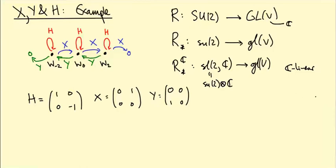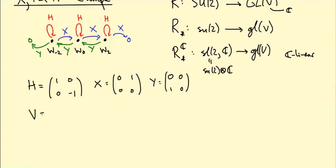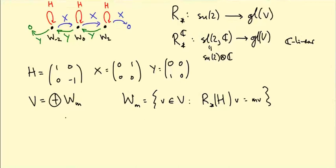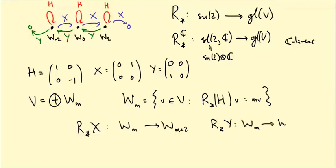The outcome was that V splits as a direct sum of spaces W_m, where W_m is the set of vectors v in V such that R*(H)v = mv — in other words, W_m is the m-eigenspace of R*(H). R*(X) sends W_m to W_{m+2} and R*(Y) sends W_m to W_{m-2}. That was the outcome of last time's video.